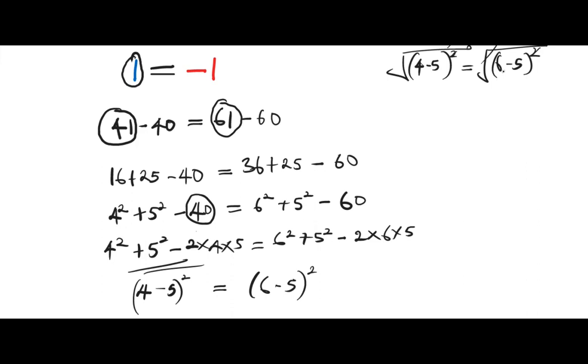So we are left with 4 minus 5 equals to 6 minus 5. Then 4 minus 5 is negative 1 and 6 minus 5 is 1. So we have been able to prove that negative 1 equals to 1 and 1 is equals to negative 1.